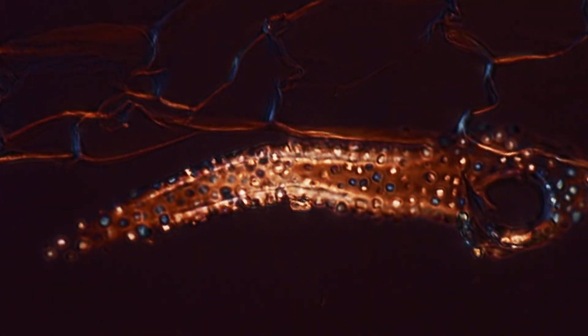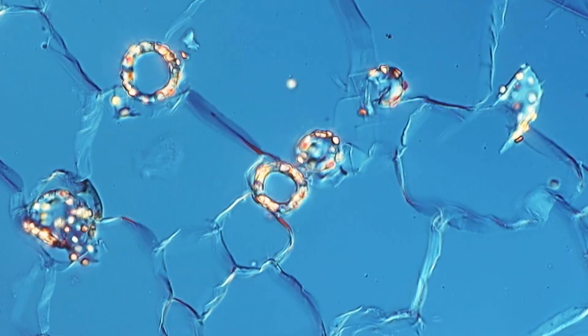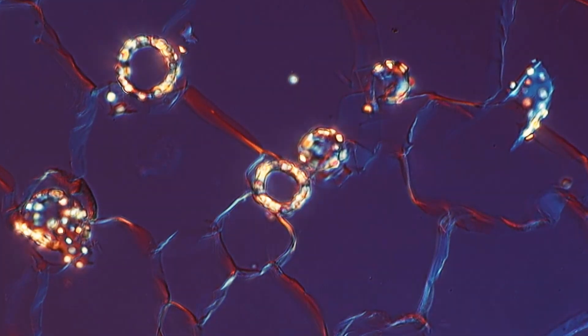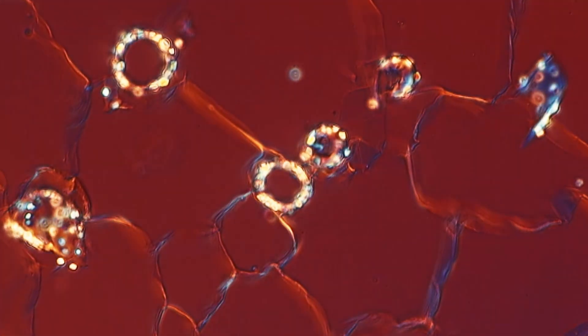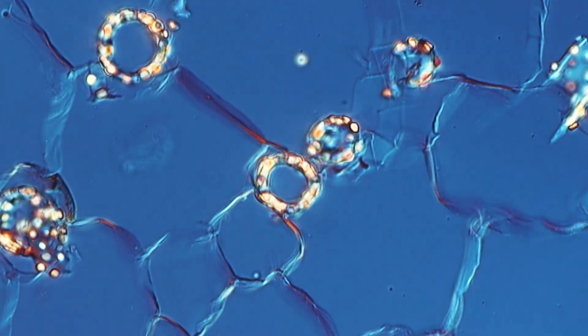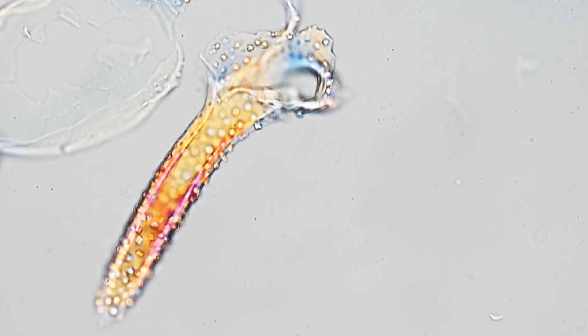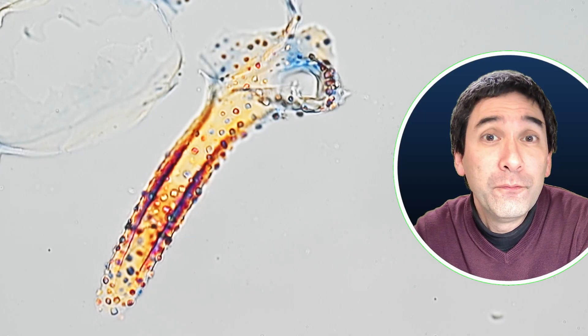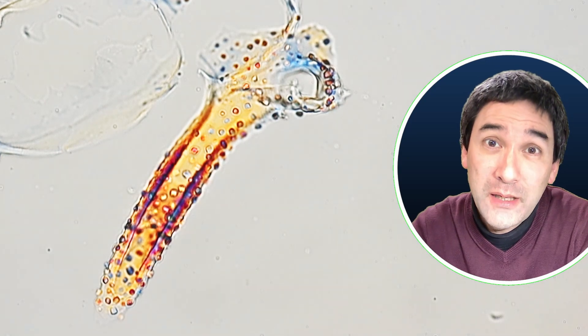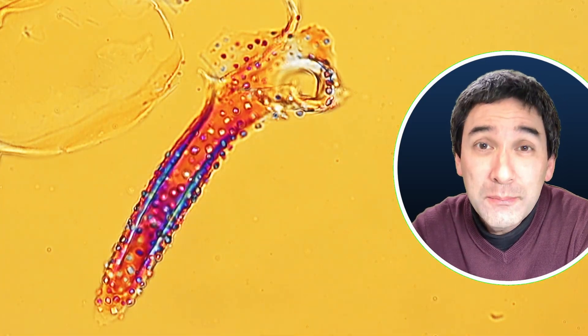The question is, of course, what do they do? Why do water lilies make those calcium oxalate crystals? While the function is not entirely clear, there could be different reasons. Several plants produce those crystals to make them more unattractive for predators to eat them, because calcium oxalate, at least in higher concentrations, can be toxic.